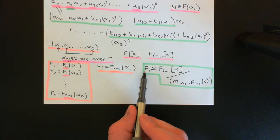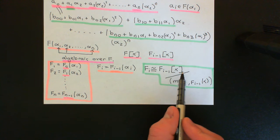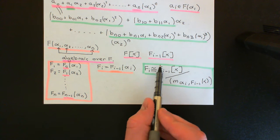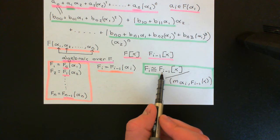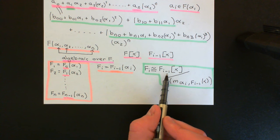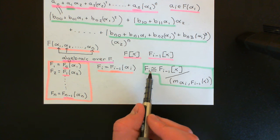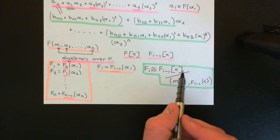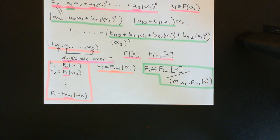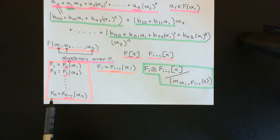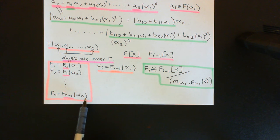The elements in Fᵢ will be polynomials in αᵢ where the coefficients are from Fᵢ₋₁. Of course, the elements of Fᵢ₋₁ themselves will be polynomials in αᵢ₋₁ where the coefficients are from Fᵢ₋₂, and so on. So hopefully you're starting to see that when we go up to Fₙ, the elements in there will actually just be polynomials in α₁, α₂, α₃, all the way up to αₙ.